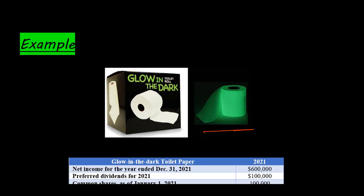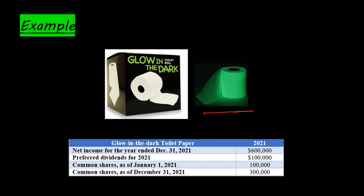Let's take a look at their financials. We've got net income for the year ended December 31st, 2021 of $600,000. They have preferred dividends for 2021 of $100,000, which will need to be subtracted from that $600,000 in the numerator when we apply the formula.